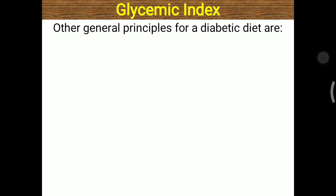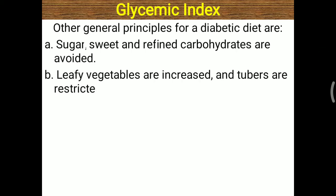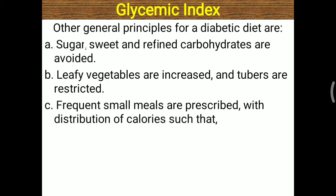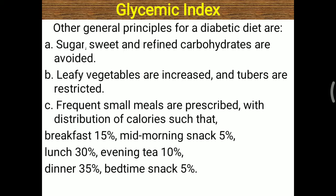Further general principles for a diabetic diet: sugar, sweets, and refined carbohydrates are avoided; green leafy vegetables should be increased; and tubers should be restricted. Frequent small meals are prescribed with calorie distribution across more than 3 intervals — about 6 intervals. Breakfast and mid-morning snack should provide 20% of total energy, lunch 30%, evening tea 10%, dinner 35%, and a bedtime snack containing only 5% of total energy requirement.